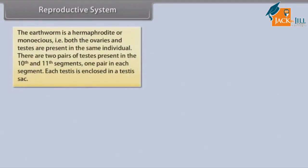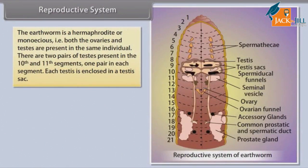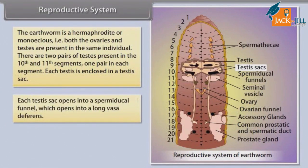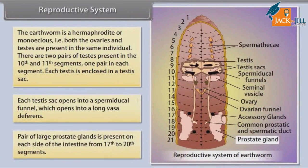Reproductive System: The earthworm is a hermaphrodite or monoecious — that is, both ovaries and testes are present in the same individual. There are two pairs of testes present in the tenth and eleventh segments. Each testis is enclosed in a testis sac, which opens into a spermiducal funnel that opens into a long vas deferens. A pair of large prostate glands is present on each side of the intestine from the seventeenth to twentieth segments.